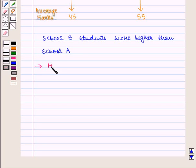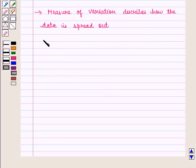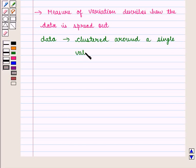Measure of variation describes how the data is spread out. Sometimes the data is clustered around a single value, but sometimes there is a lot of variation in the data.